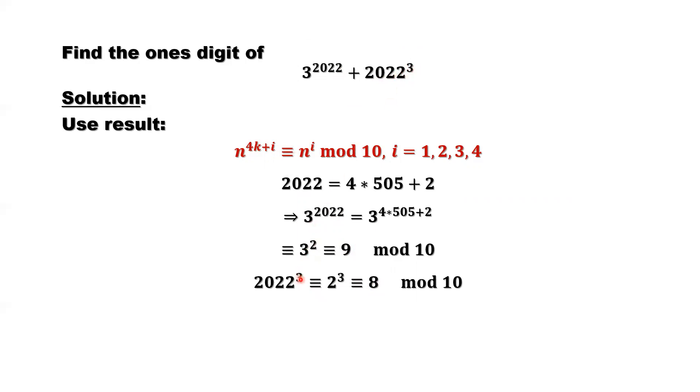If you use this result, you can see that you don't have k, k equals 0. So here, 2022 to the power of 3, it's equivalent to have 2 to the power of 3 if we want to find the one's digit. 2 to the power 3, that's 8. So the last digit for the first term, that's 9. For the second term, that's 8.